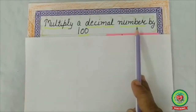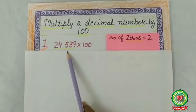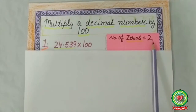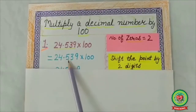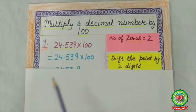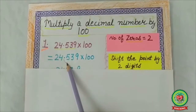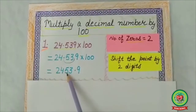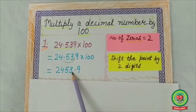Now we will learn to multiply a decimal number by 100. First example: 24.539 multiplied by 100. Step 1: count the number of zeros — it is 2. So shift the point by 2 digits to the right side. The point is currently between 4 and 5. Shifting 2 digits: 5, then 3 — the point comes between 3 and 9. So the answer is 2453.9.